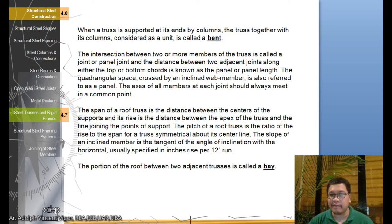The axis of all members at a joint should always meet in a common point. The span of a roof truss is the distance between the centers of the supports. If this is your two supports or columns, the distance between where the ends of the truss lie, that's what you call the span. The pitch of a roof truss is the ratio of the rise to the span for a truss symmetrical about its center line.